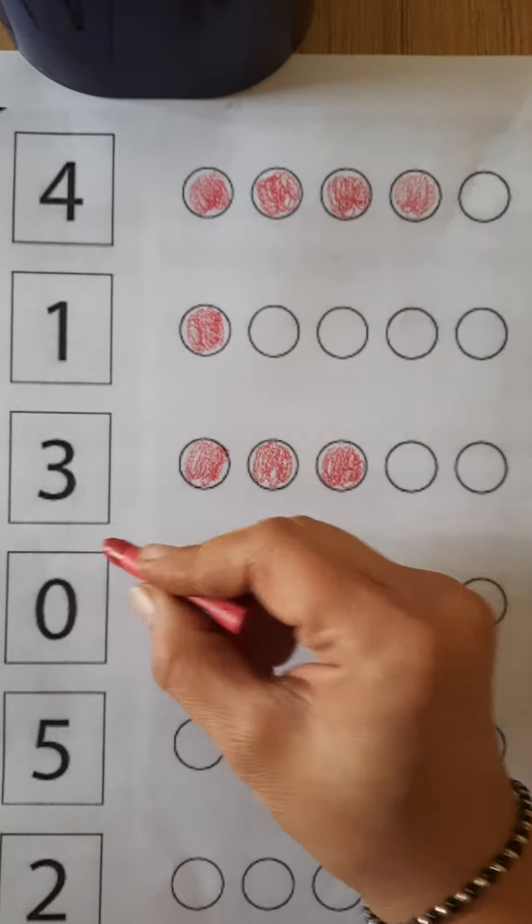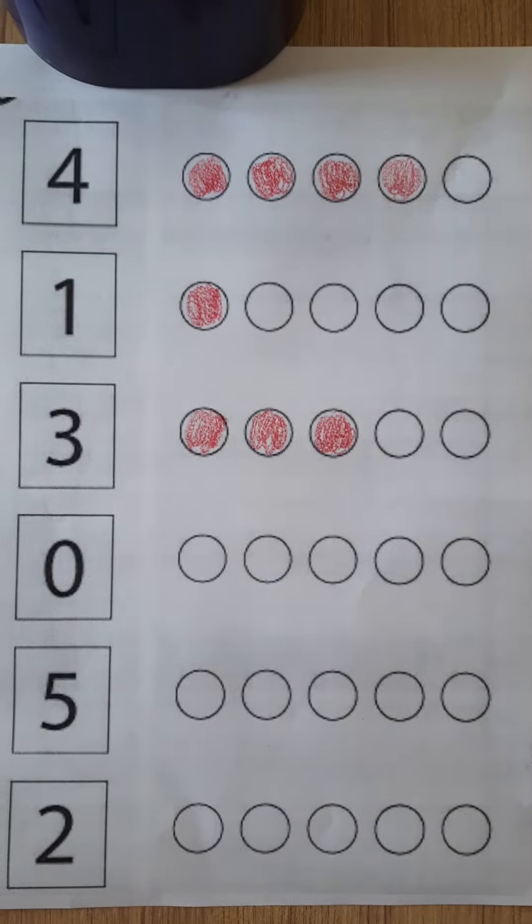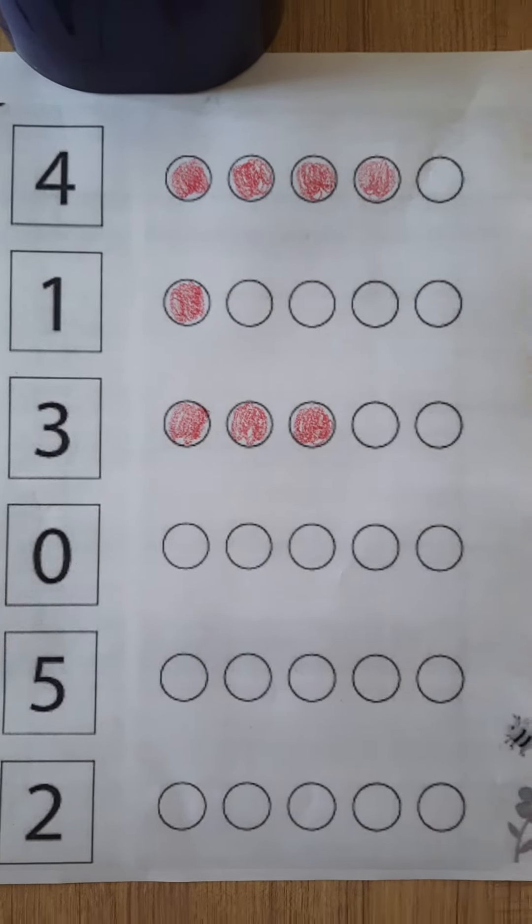Which number is this? This is number 0. And 0 means nothing. So we will not color in any of these circles.